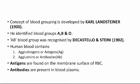Human blood contains certain specific substances called agglutinogens or antigens, and agglutinins or antibodies. Antigens are also known as agglutinogens and antibodies are also known as agglutinins.